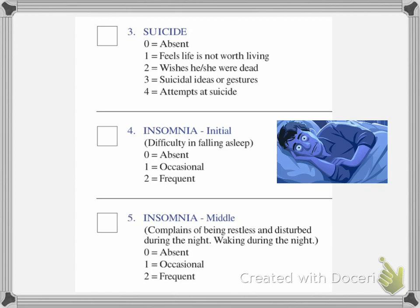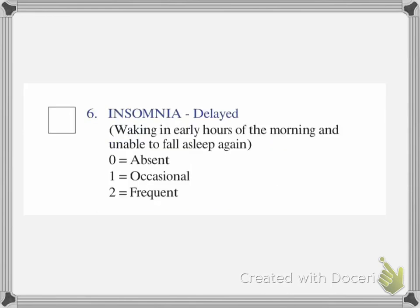Question four is insomnia, divided into three parts. The first part asks about any difficulty falling asleep — mark it absent, occasional, or frequent. The second part asks about waking up during the night: how many times, trouble going back to sleep — also marked absent, occasional, or frequent. The third part covers early morning waking, such as waking at 3 a.m. and being unable to fall back asleep — marked on a scale of zero, one, or two.